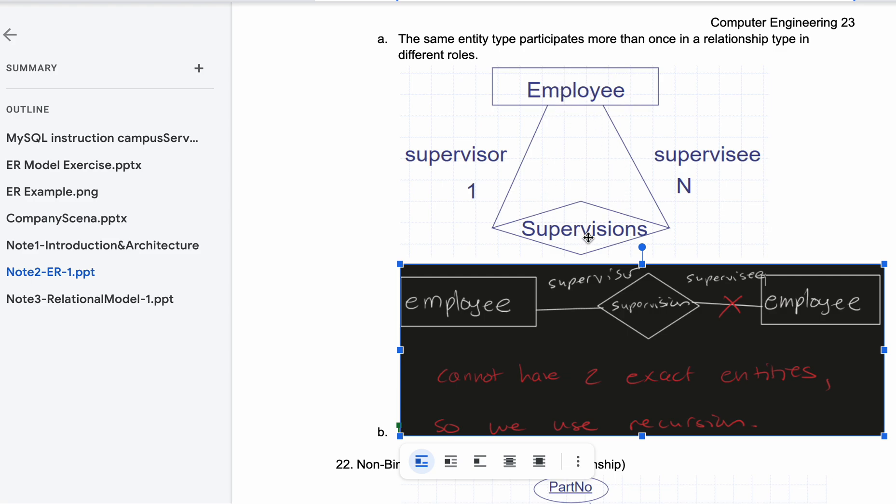So we have our employees, and then we have its relationship type as supervision. They're a supervisor and they're also a supervisee of many different departments, but they're a supervisor of one. So the relationship to this company, you can think of it as they're a supervisor but also a supervisee.